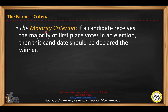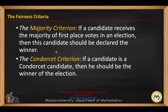The majority criterion: if a candidate receives the majority of first-place votes in an election, then this candidate should be declared the winner. The Condorcet criterion: if a candidate is a Condorcet candidate, then he or she should be the winner of the election.